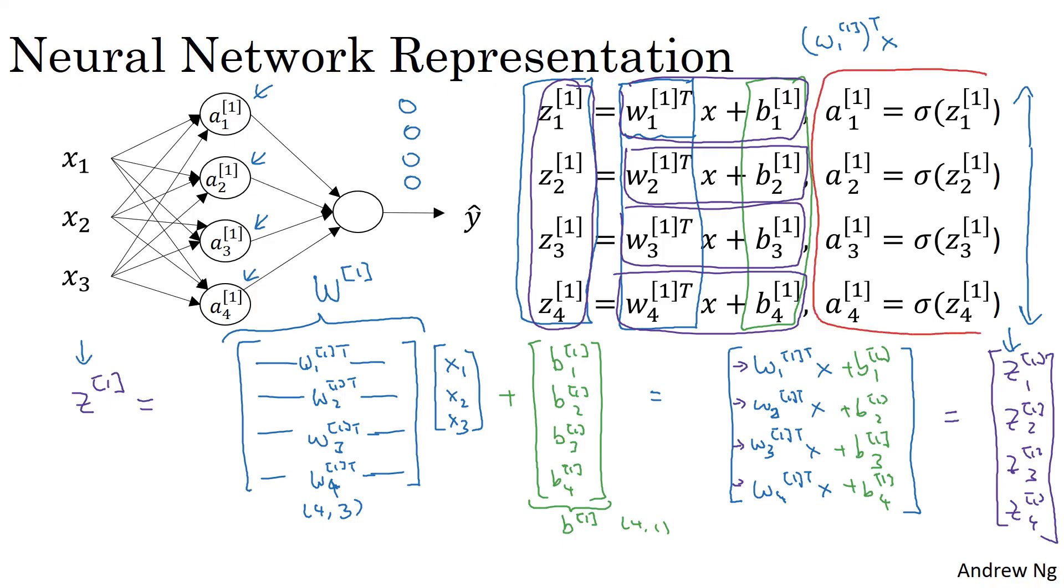So now we've computed z using this vector matrix notation. The last thing we need to do is also compute these values of a. And so probably won't surprise you to see that we're going to define a1 as just stacking together those activation values, a11 through a14. So just take these four values and stack them together in a vector called a1.